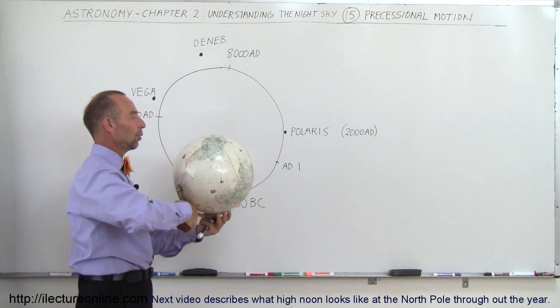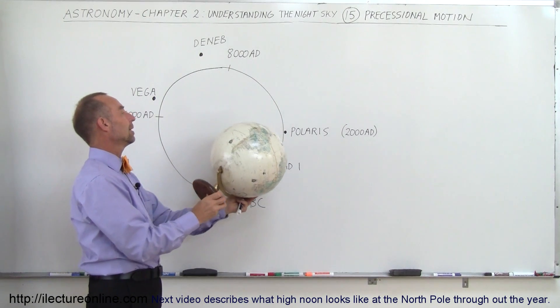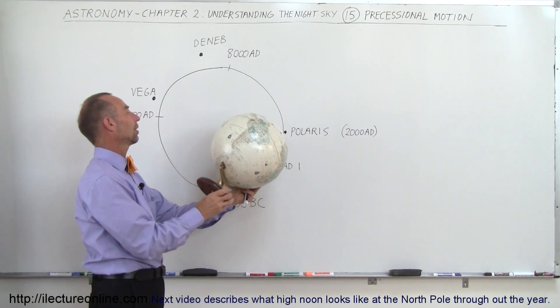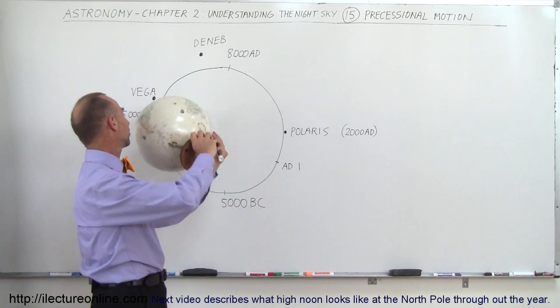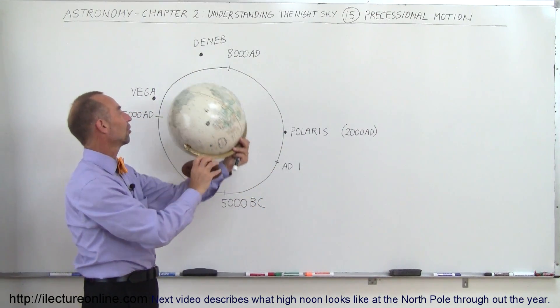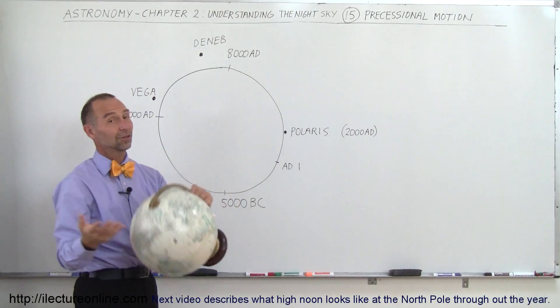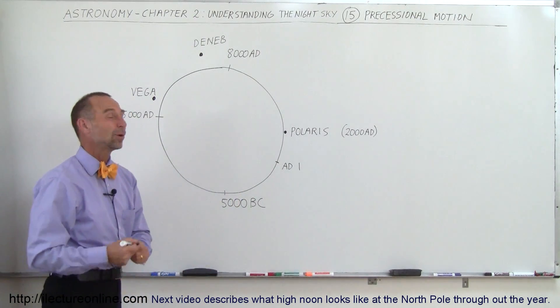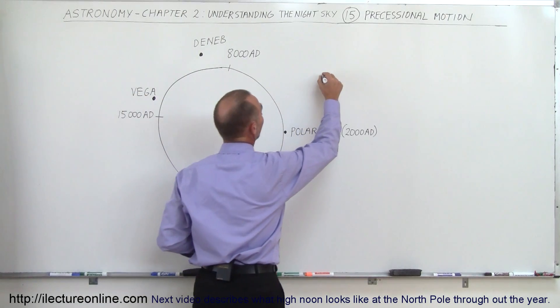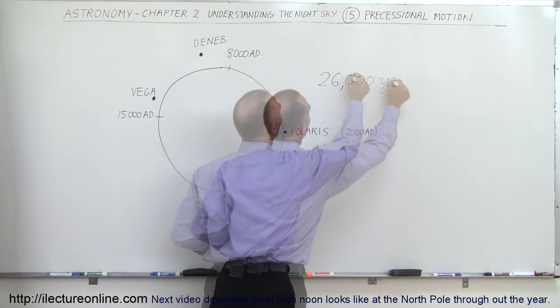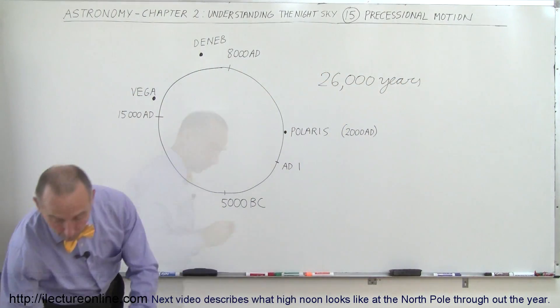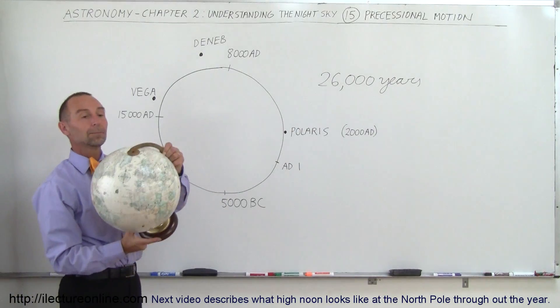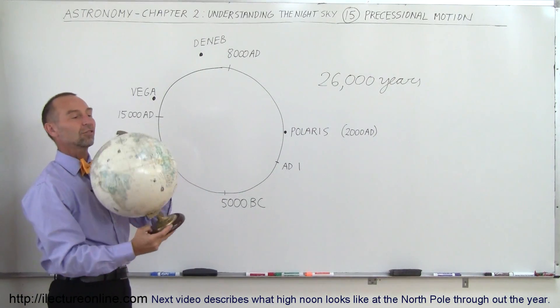So what happens is, right now you can think about the Earth being pointing directly to Polaris, but over time it will precess and come back to Polaris, and it'll just keep doing that over and over. The question is, how long does it take to make one precessional motion like that, one rotation? It takes 26,000 years. So every 26,000 years, the Earth will make one complete rotation as it precesses around like that.